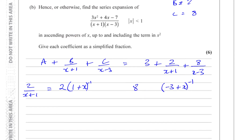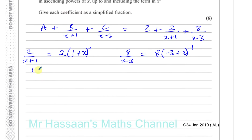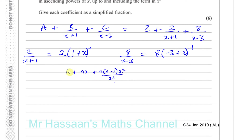Let me show why we write 8 over (x-3) in this form. We know the binomial expansion: (1+x)^n = 1 + nx + n(n-1)x²/2! and it continues. This formula only applies when expanding something in the form (1+x)^n — there must be a 1 in that position. If there's not a 1, we have to make sure it becomes a 1.